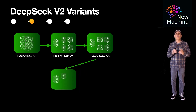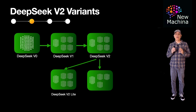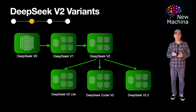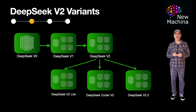With the introduction of V2, there were some offshoot variants that emerged. These included DeepSeek V2 Lite, DeepSeek Coder V2, and DeepSeek V2.5.